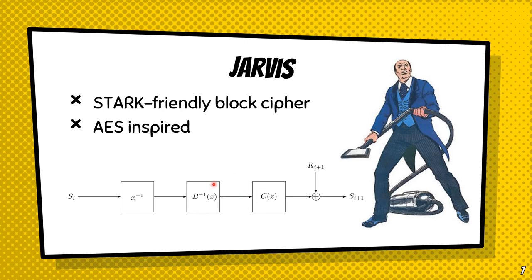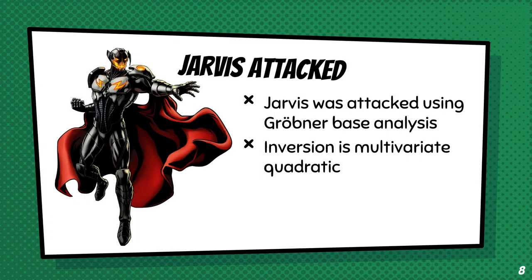We went for the more extreme option by taking the inversion over the entire state and also taking an affine polynomial over the entire state, releasing the need for any diffusion layers. While the inversion was really efficient for Starks, the affine polynomial was the inefficient part, so we split it into two parts B-inverse and C, such that B and C are both of low degree. The protocol evaluates each of these blocks separately, and each is multivariately of low degree.